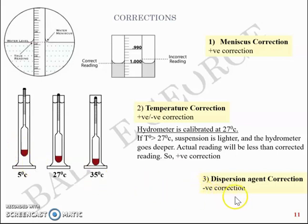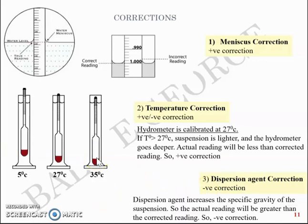The third one is a dispersion agent correction which is a negative correction. The dispersion agent is the one that you use in mixing the 50 grams of soil with water. The dispersion agent is usually sodium hexametaphosphate and its function is to make sure that the soil particles are not flocculated and properly dispersed and act as single units. The dispersion agent increases the specific gravity of the suspension and so the actual reading will be greater than the corrected reading. So you take a negative correction.